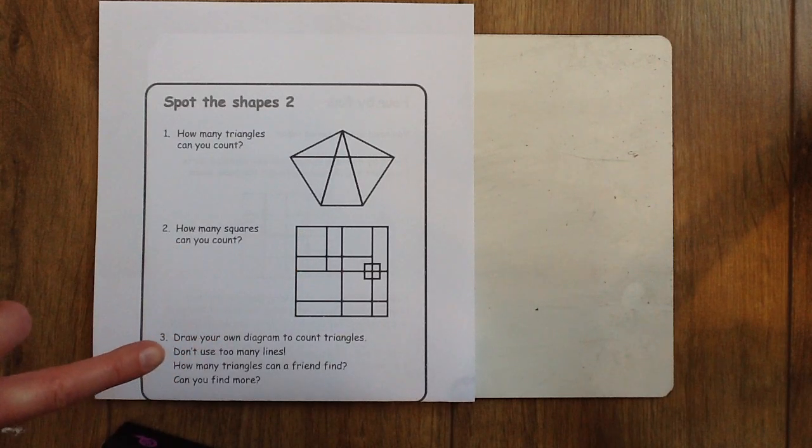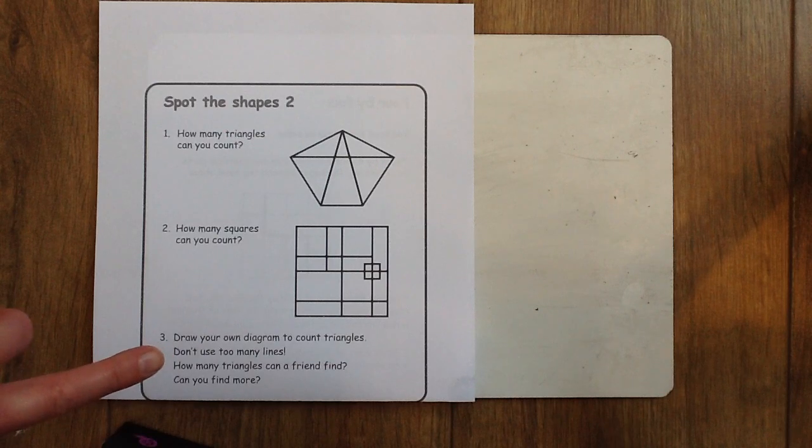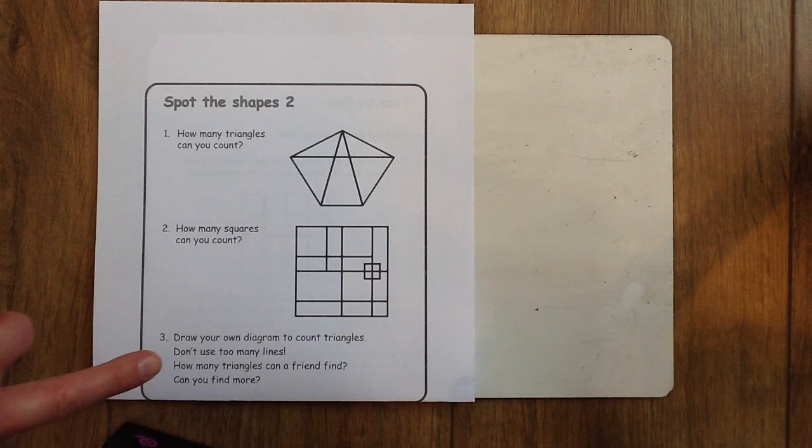And then as an extension, part three says draw your own diagram to count triangles. Don't use too many lines. How many triangles can a friend find? Can you find more?